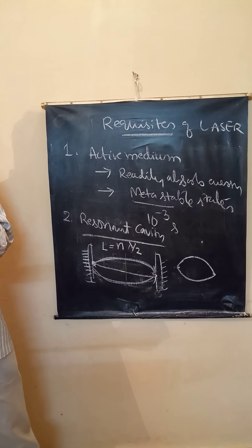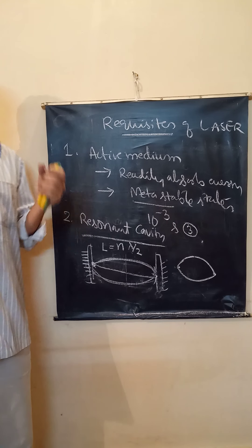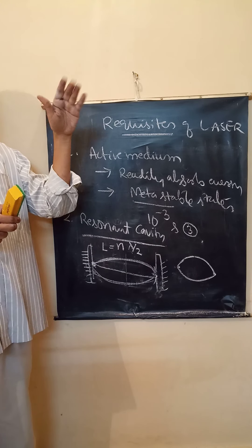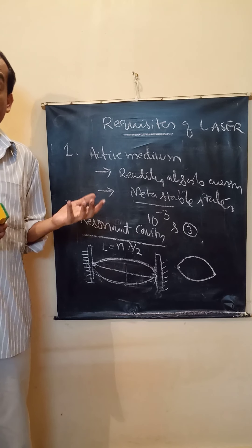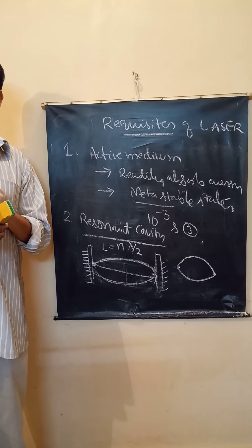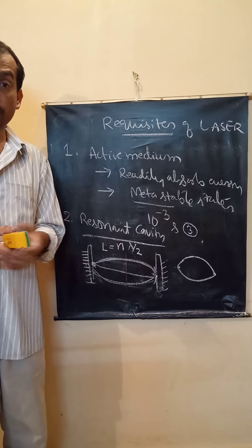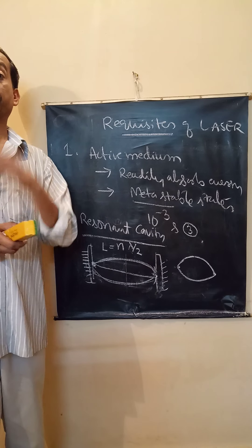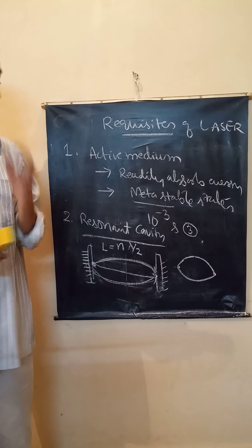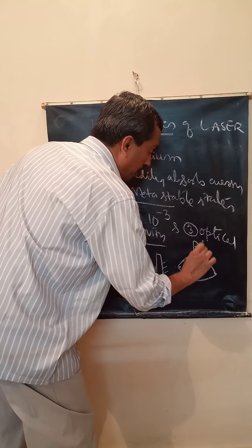The third requisite for laser is a suitable pumping device — to pump atoms from ground state to excited state. Electrons emit radiation when they make a transition from higher level to lower level. To push electrons from ground state to higher level, you need an energy source — it can be light, electrical energy, thermal energy, or chemical energy. This process of pumping electrons from ground state to metastable state is called optical pumping.